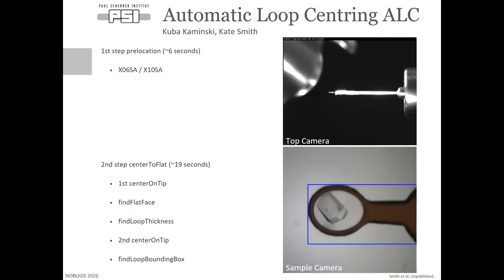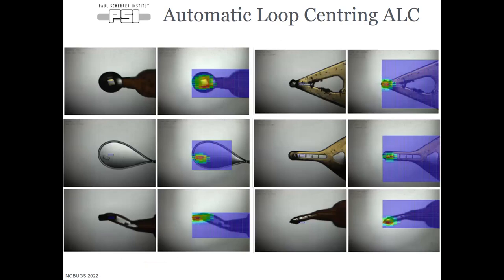For the loop centering component, we had to make a lot of hardware and software updates. For our undulator beamlines, we have a very shallow depth of focus and a small region of interest. We first align the sample roughly to the rotation axis, which is aligned with our beam and camera. We have a camera mounted above the diffractometer looking down at the sample, which allows alignment as other devices are moving in the ESCAPE state. When we get to the sample alignment stage, the sample is already in focus and in view, so we do our second component — 'centre to flat' — where we find the flat face, the thickness, and determine where to perform our raster scan. We deal with a vast variety of loop shapes, and one of our challenges was making sure we cover all the different loop shapes.